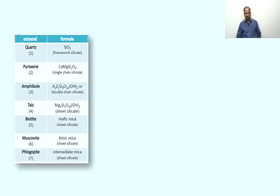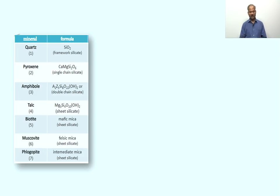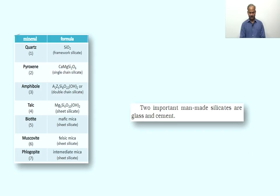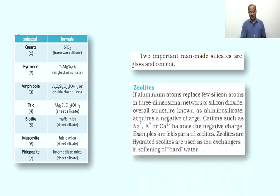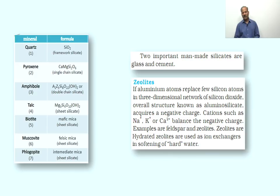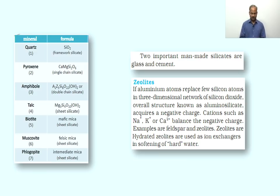As a quick revision: quartz is a framework or network silicate, pyroxene is a single chain silicate, amphibole is a double chain silicate, and talc and mica are sheet silicates — their formulas are given accordingly. Two important man-made silicates are glass and cement. Zeolites are hydrated aluminosilicates where aluminium atoms replace some silicon atoms in the three-dimensional network of silicon dioxide. The overall structure acquires one unit negative charge, balanced by cations such as sodium, potassium, or sometimes calcium. Zeolites are used as ion exchangers in softening of hard water.